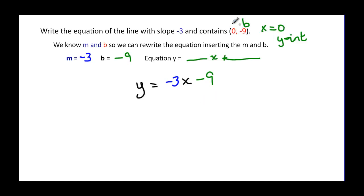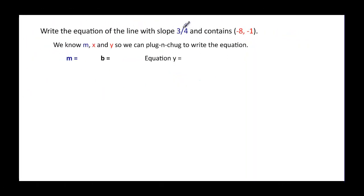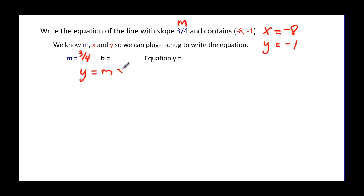That shortcut only works if our point starts with a zero in the x. If it starts with something different, then we have to go through the full plug-and-chug process. Let's try again — now we know slope is three-fourths and it contains the point where x equals negative eight and y equals negative one. So m is three-fourths. It may be helpful to write y = mx + b and then plug in what we know.